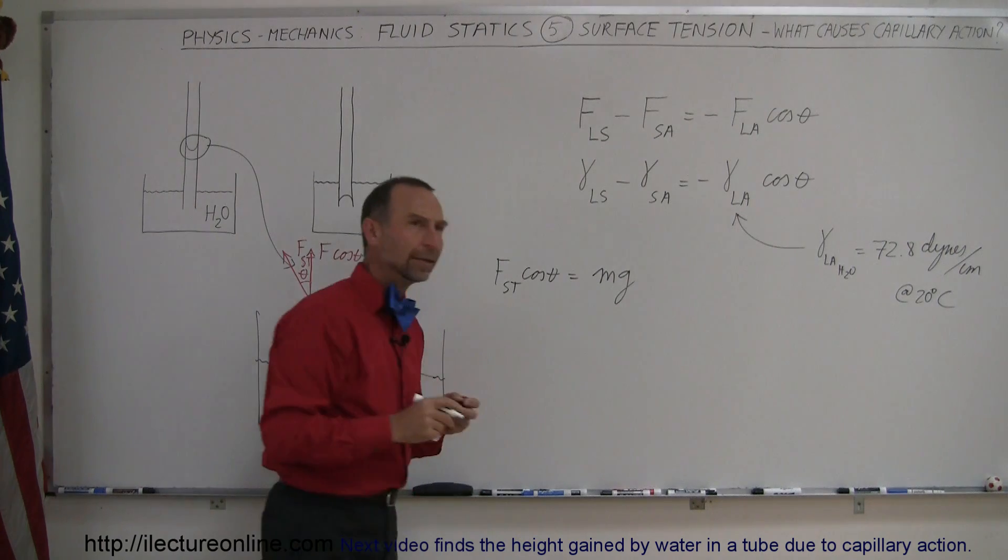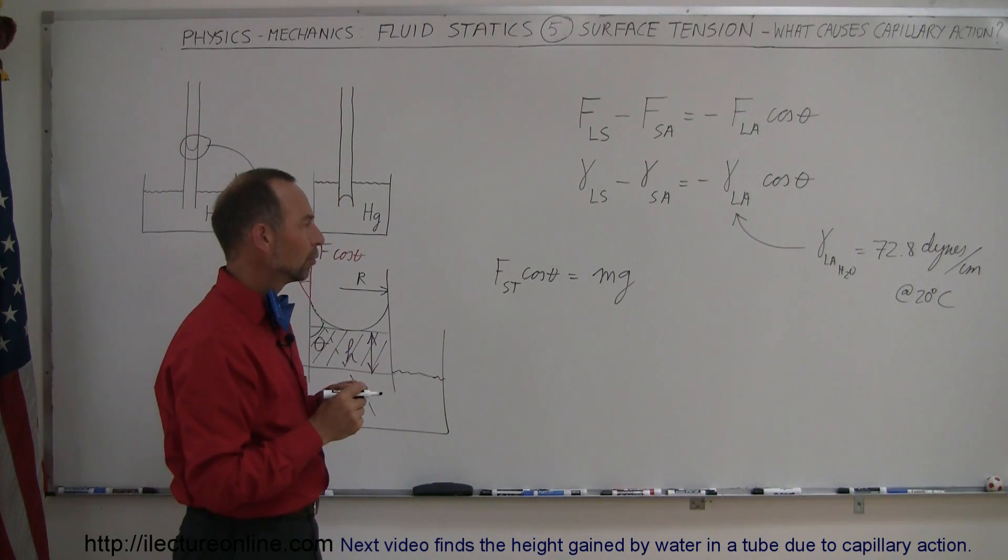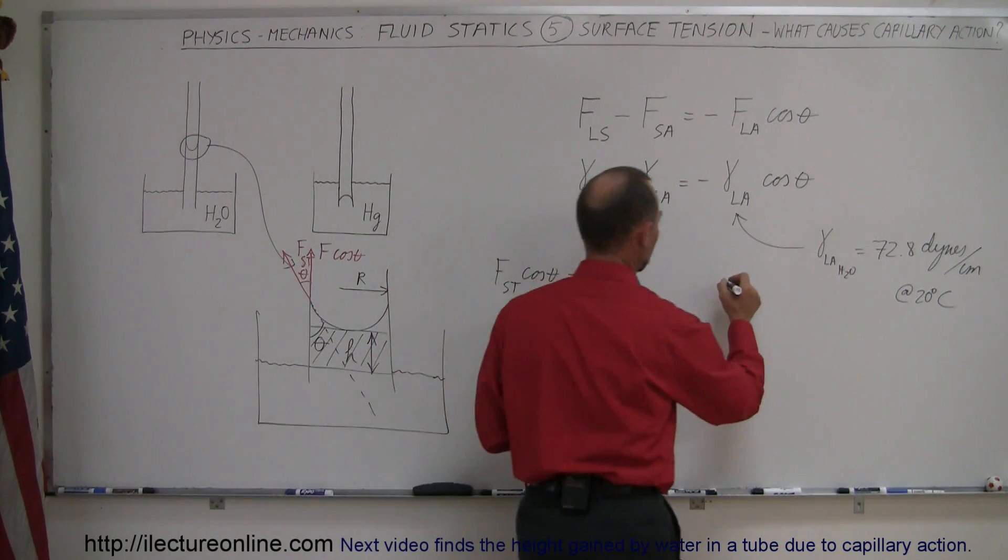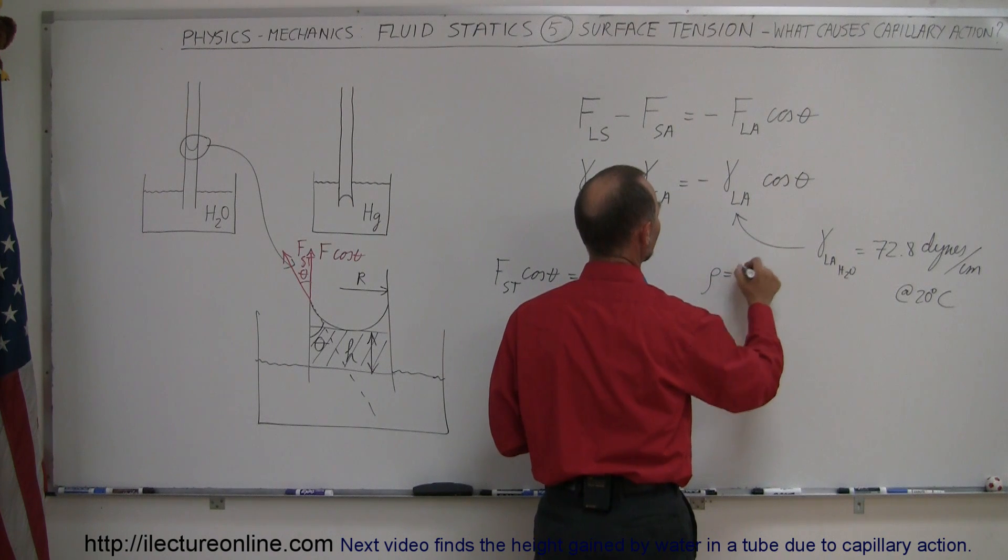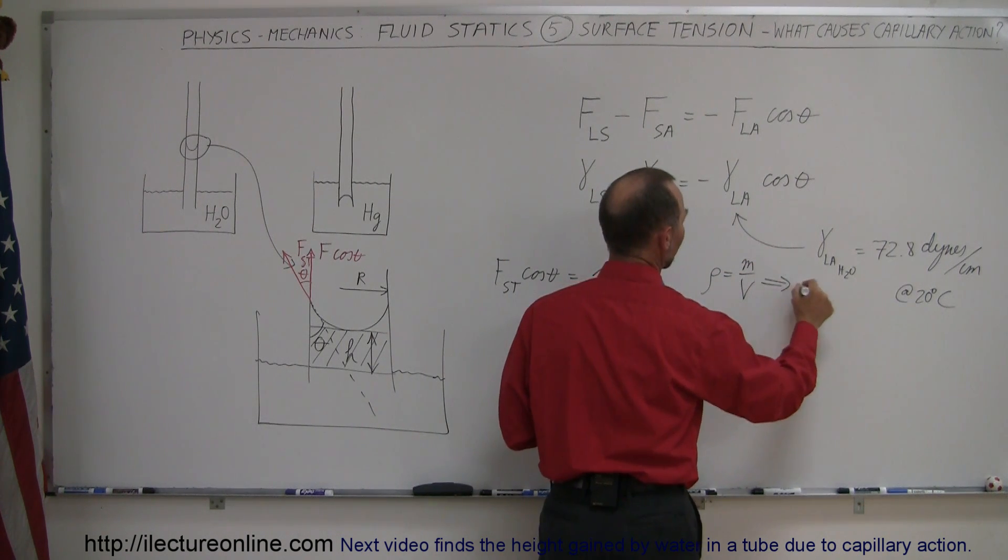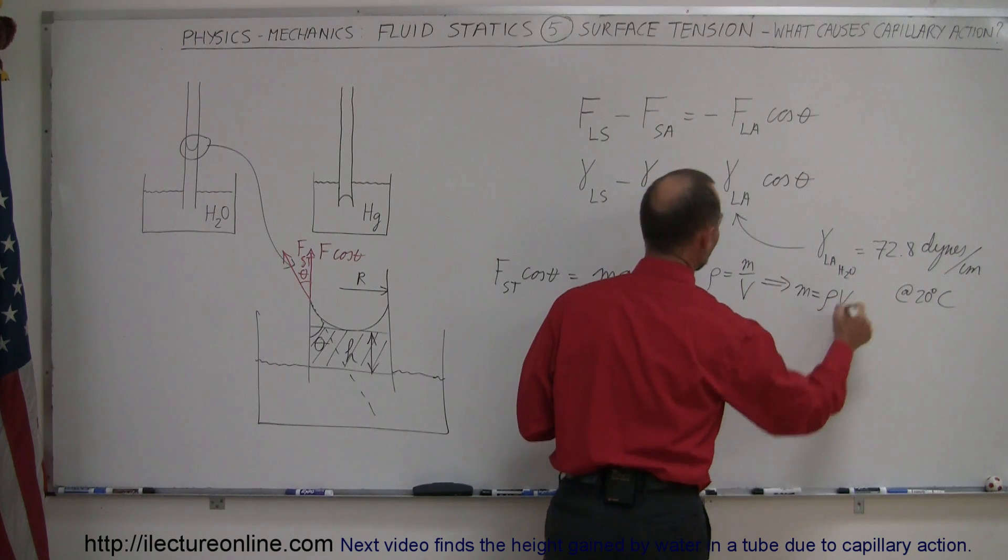First of all, the mass of the water, that would be equal to, let's see, let's do a connection here. We have density is equal to mass divided by volume, which means that mass is equal to density times volume.